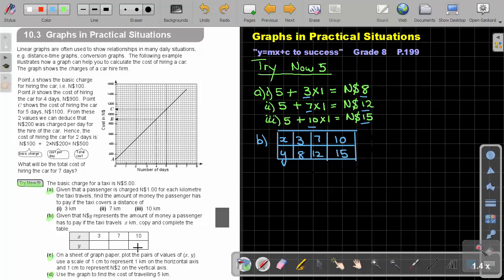Now, on a sheet of graph paper, plot the points XY, using a scale of 1 centimeter, 1 kilometer on the horizontal, and 1 centimeter to represent 2 on the vertical. So 1 centimeter for 1, and this is on the horizontal, and 1 centimeter to represent 2 on the vertical axis.